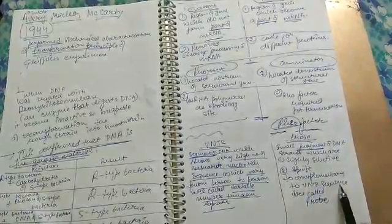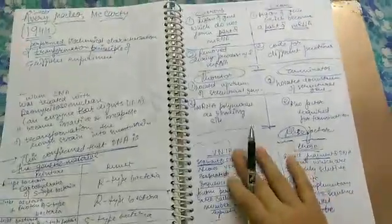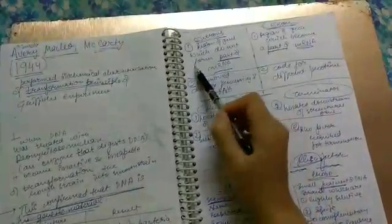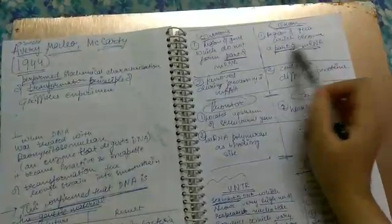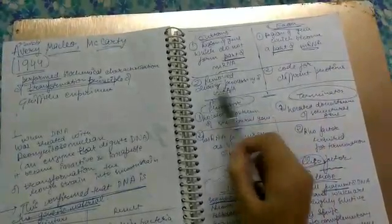Then introns versus exons. Introns do not form part of mRNA. Exons are regions of gene which become part of mRNA. Introns are removed during the process of splicing. Exons code for different proteins.